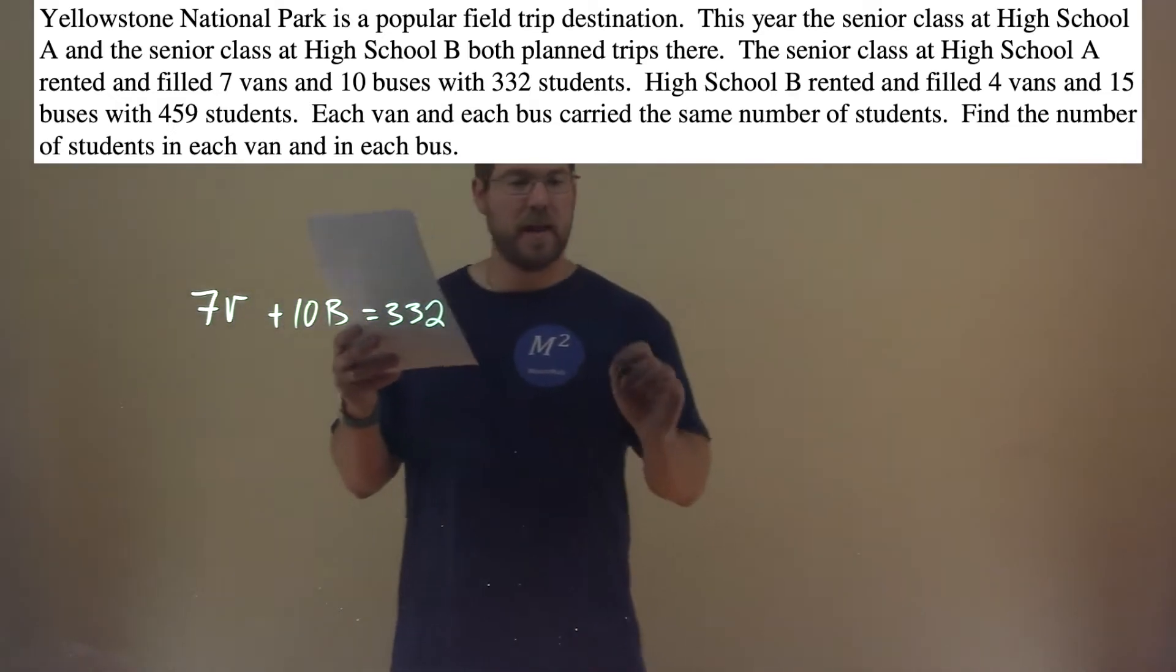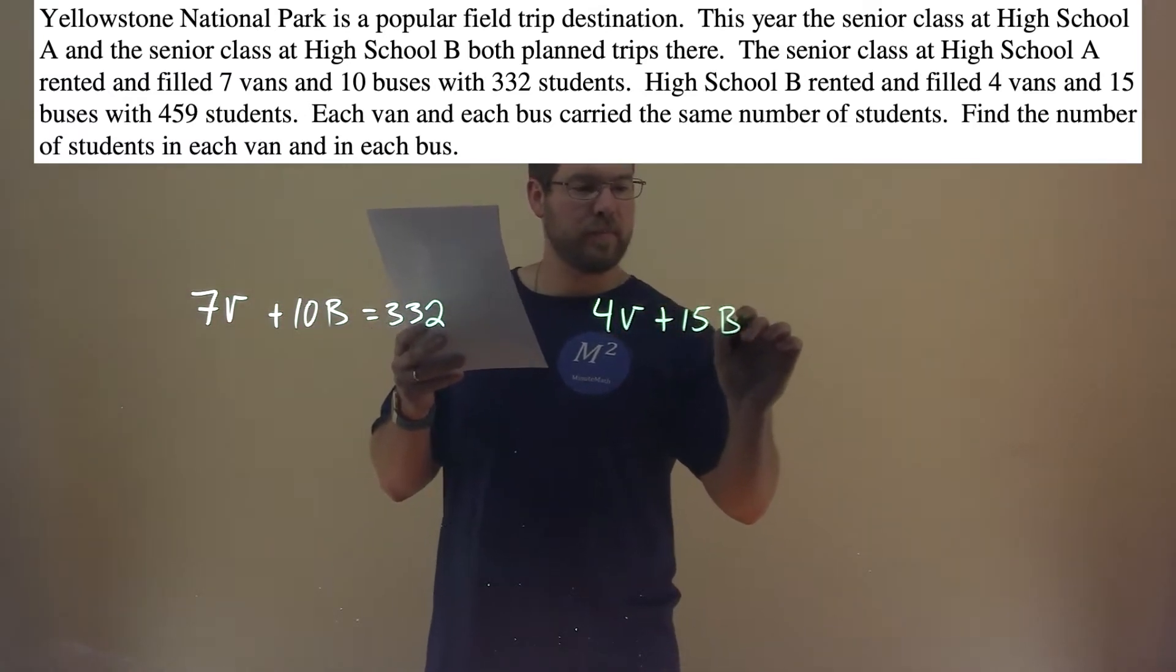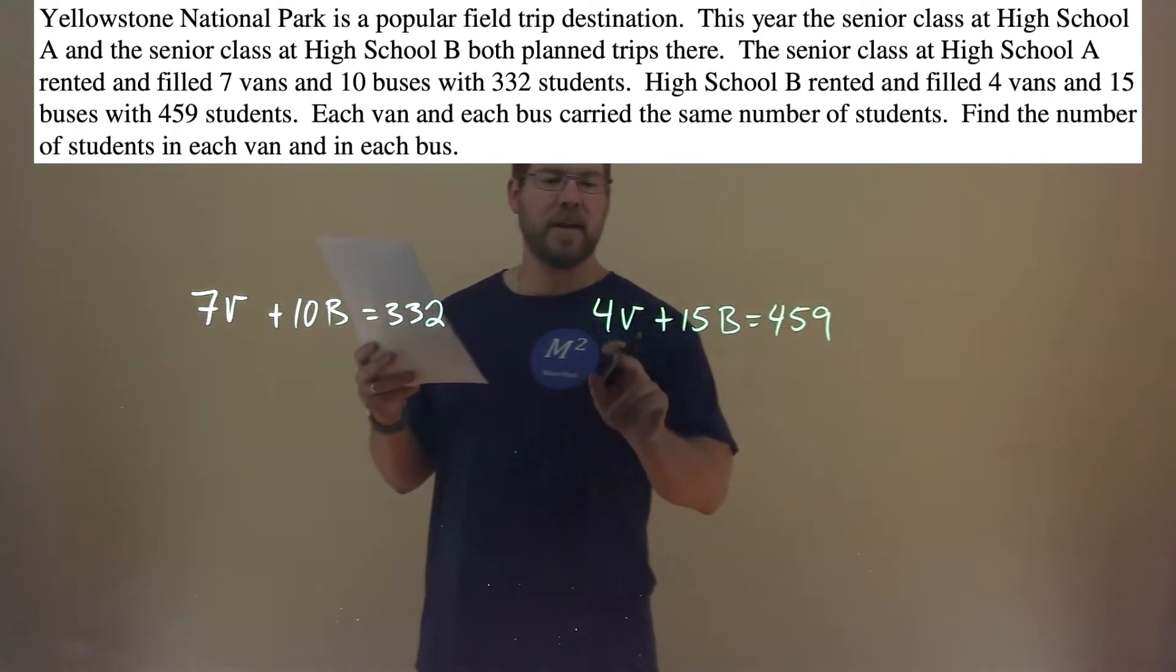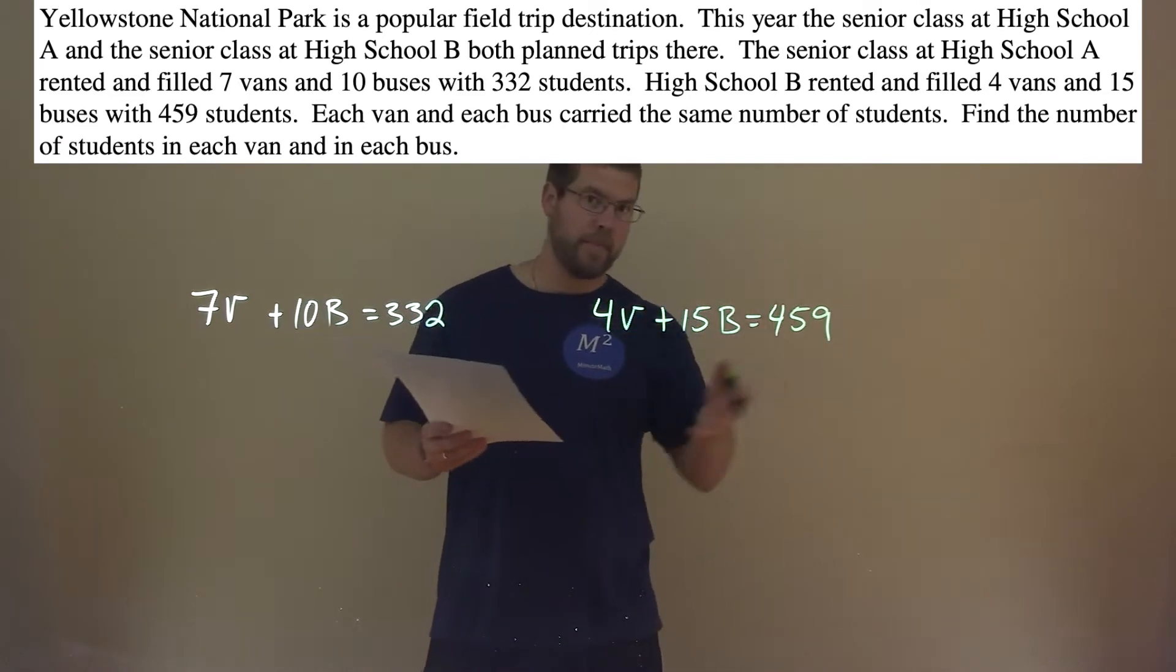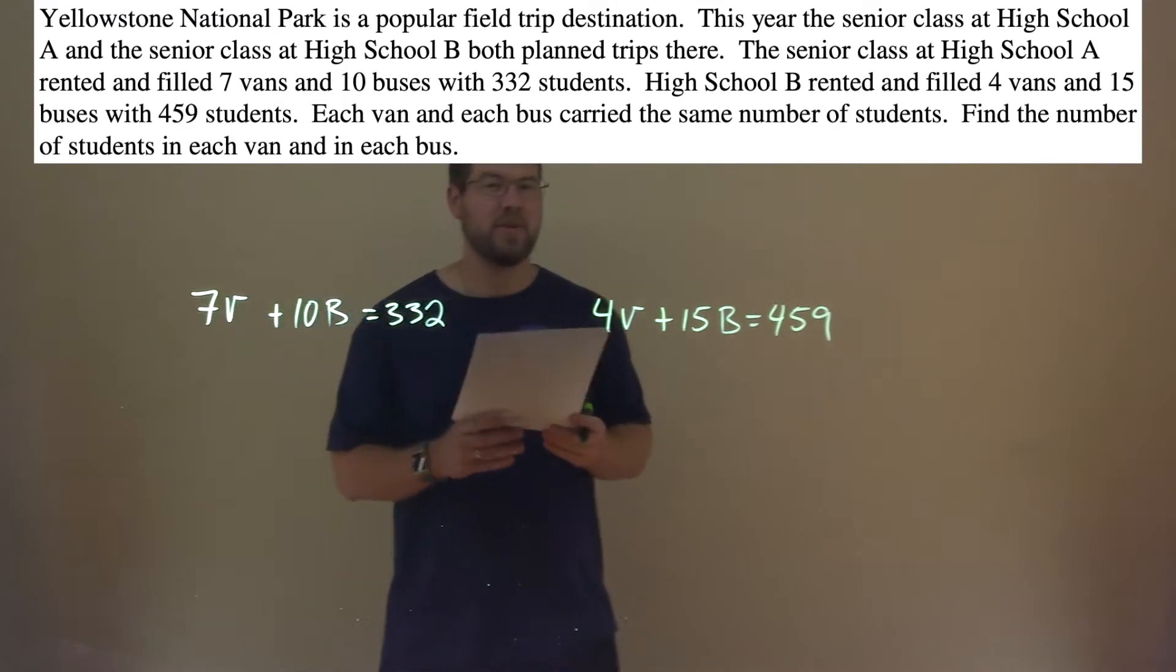High School B rented and filled four vans and 15 buses for a total of 459 students. And again, v and b represent the number of students that can fit in each van and each bus. All right. Well, now we have our system of equations we can solve.